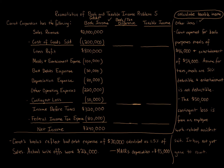The first item: Carrot expensed for book purposes meals of $46,000 and entertainment of $54,000. Adding those two numbers together gives us the $100,000 of meals and entertainment expense shown on the books. For tax purposes, meals are 50% deductible and entertainment is not deductible at all. That's where the $100,000 of book meals and entertainment comes from.